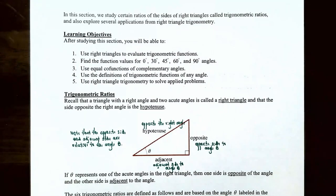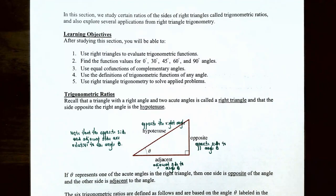In the previous video we talked about how to use right triangles to evaluate trigonometric functions. We also talked about the function values of the trigonometric functions for 0 degrees, 30 degrees, 45 degrees, 60 degrees, and 90 degrees. We also found out that co-functions of complementary angles are equal, and we used the definitions of trigonometric functions for any angle.